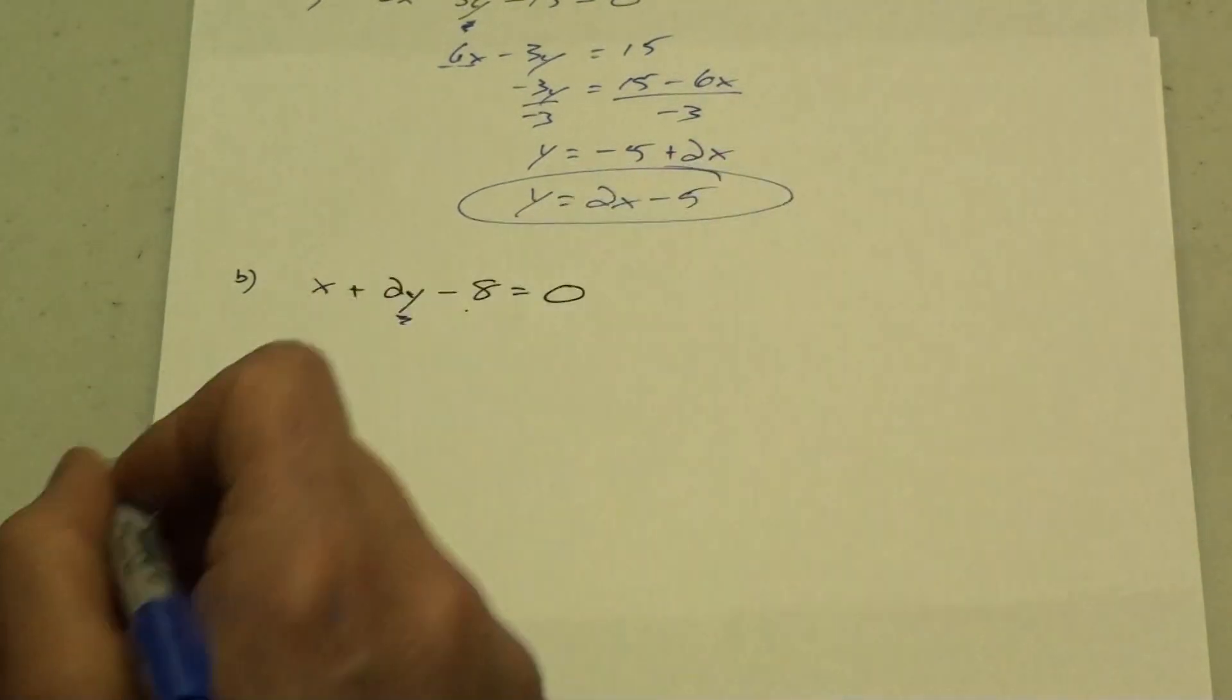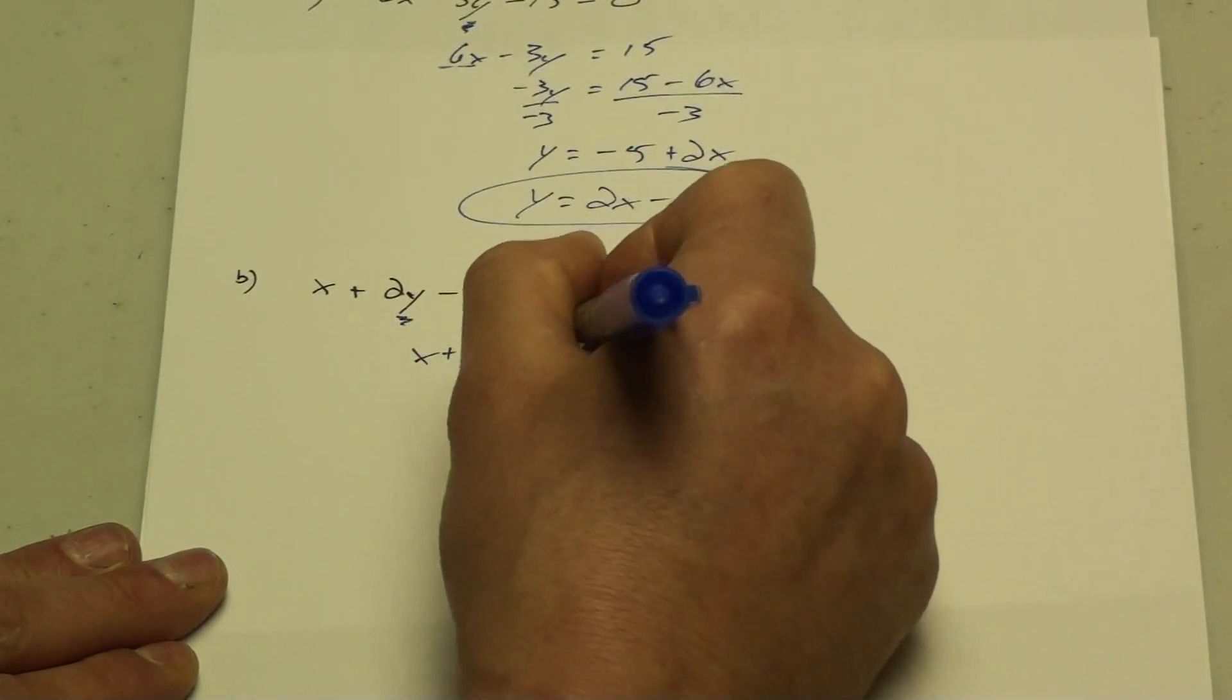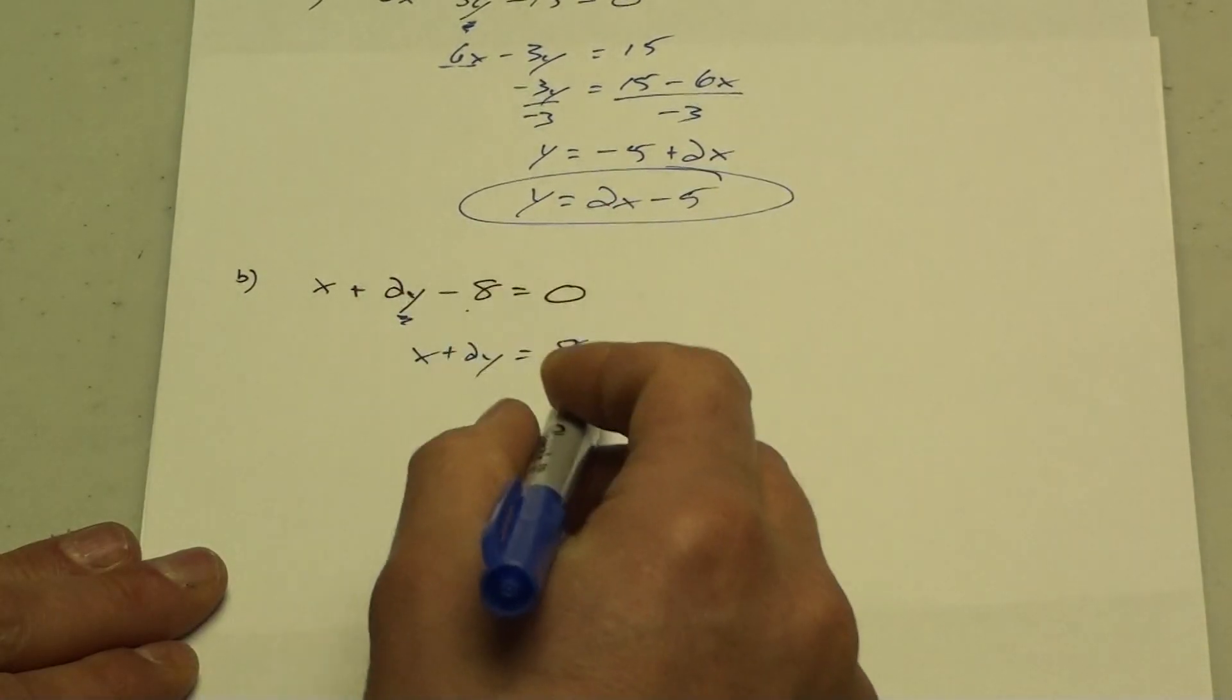I want to add 8 to both sides to move that minus 8. So I have x plus 2y equals 8. I went from a negative 8 to a positive 8.